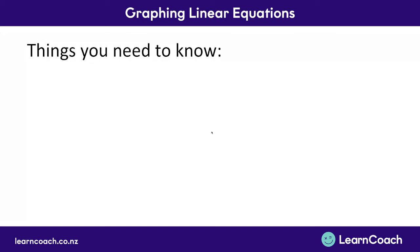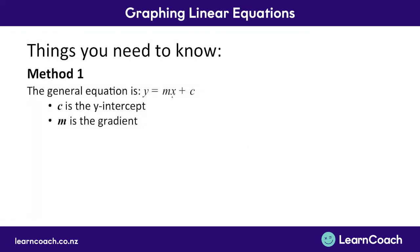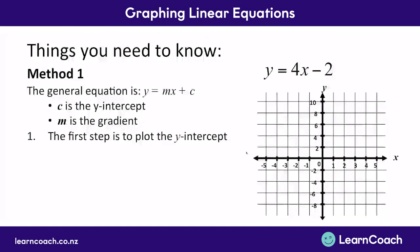What you need to know from this, you need to know that there are two methods. The first method is your y equals mx plus c. You know that c is the y-intercept, and you know that m is the gradient. Now your first step is to plot your y-intercept. That's going to be a negative 2, because c is negative 2.